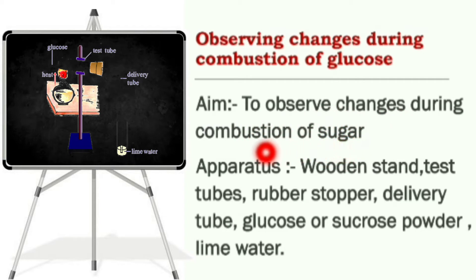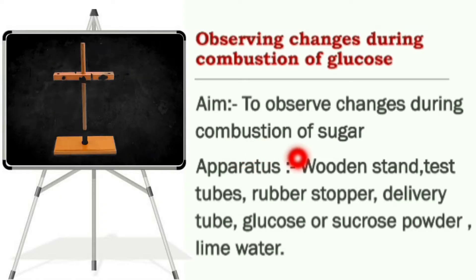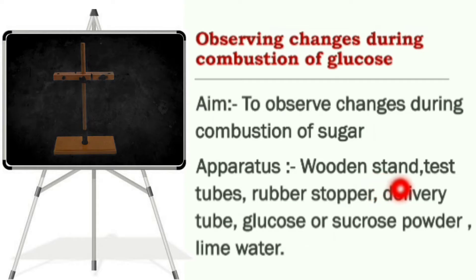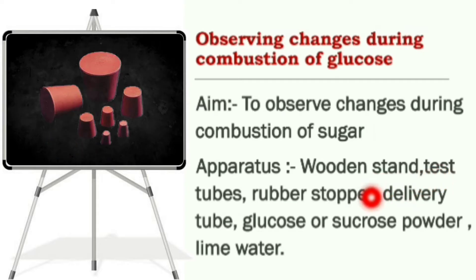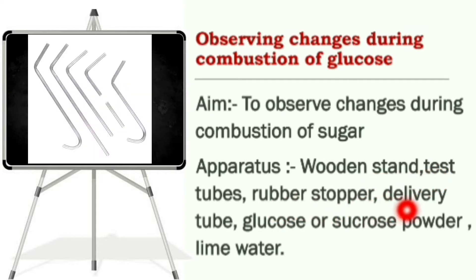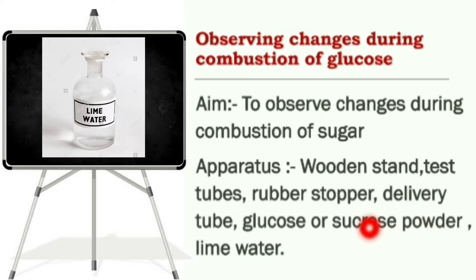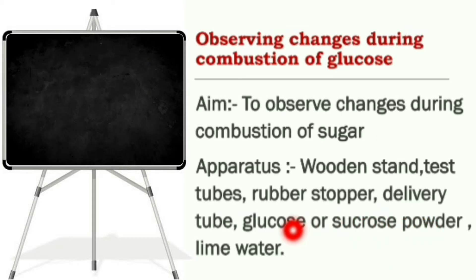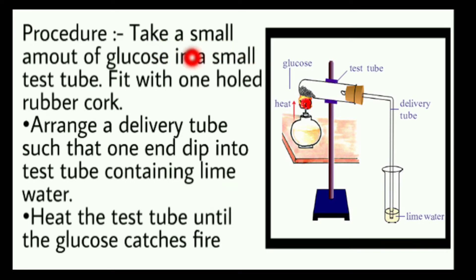When the sugar undergoes combustion it will change, so we observe it. Apparatus: wooden stand, test tube, rubber stopper, delivery tube, glucose powder, lime water. We take a small amount of glucose powder in a small test tube and fit one rubber cork.